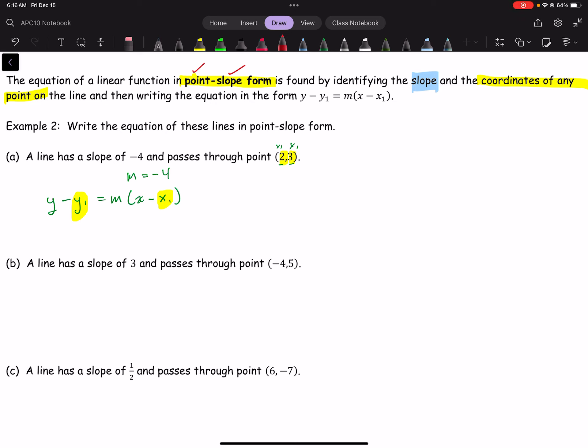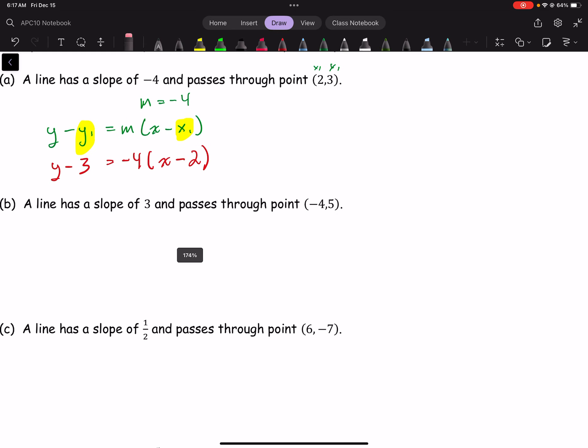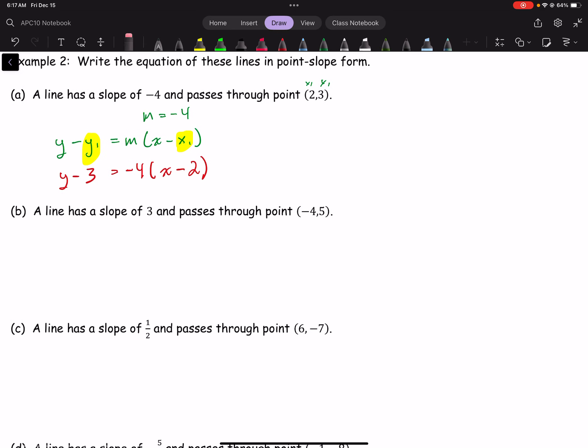In the point, so here, I'm just going to plug in y minus, and what I notice is y1 is 3, so y minus 3. M is minus 4. And then we do x minus. Now what I notice is x1 is 2. So in case you're wondering, that's where I get the 2 and 3 from. So, that's point-slope form. That's all there is.